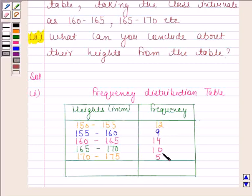Similarly, we have written the frequency of all other intervals. Now, sum of all these frequencies is 50, which is same as number of students. So, this completes the first part.